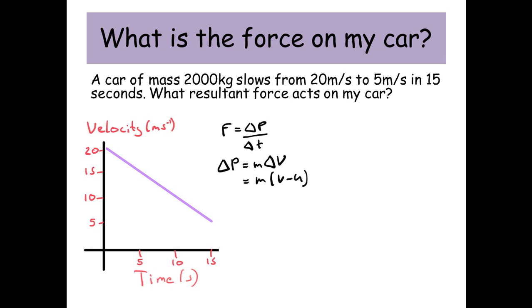So if I do M brackets the final velocity minus the initial velocity. And we know the final velocity, well that's 5 and the initial velocity is 20. And we also know our mass is 2,000 kilograms.